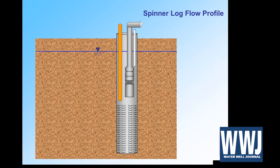I'm showing a submersible pump here — it could be a vertical turbine pump, but a submersible is a little easier. We have the motor intake and our pump bowls, and above it a sounding tube where we can measure water levels just like normal. There's also an access tube, usually about three inches in diameter, open at the bottom. This allows us to run wireline tools down past the pump while it's running and then evaluate our screened interval.